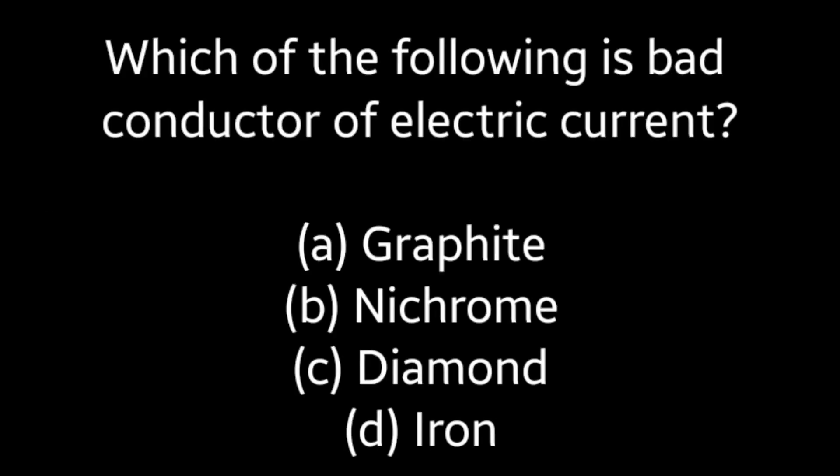Next question: Which of the following is a bad conductor of electric current? (A) Graphite, (B) Nichrome, (C) Diamond, (D) Iron. Answer is Option C: Diamond.